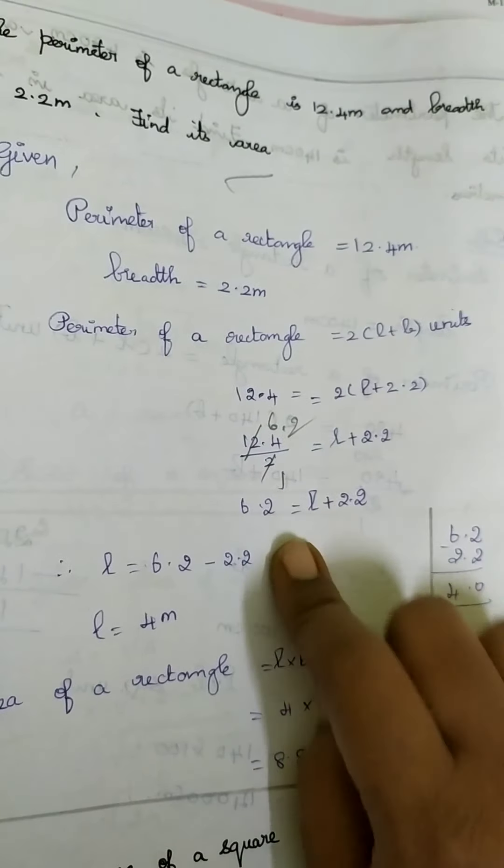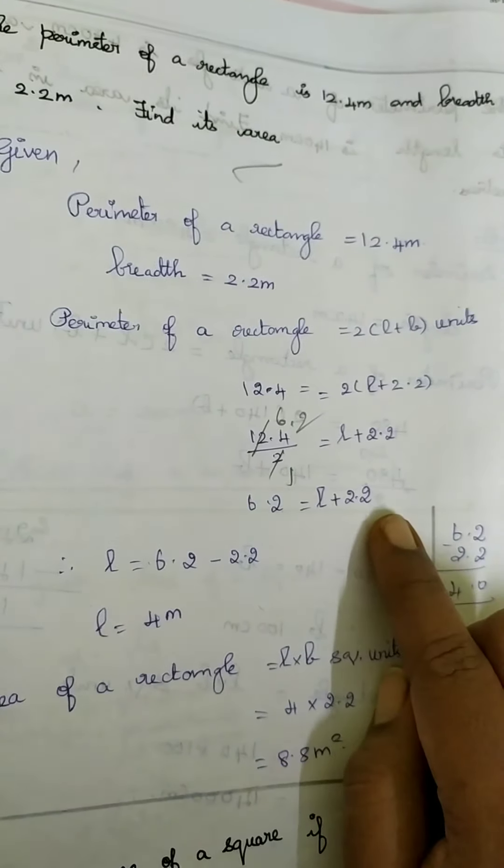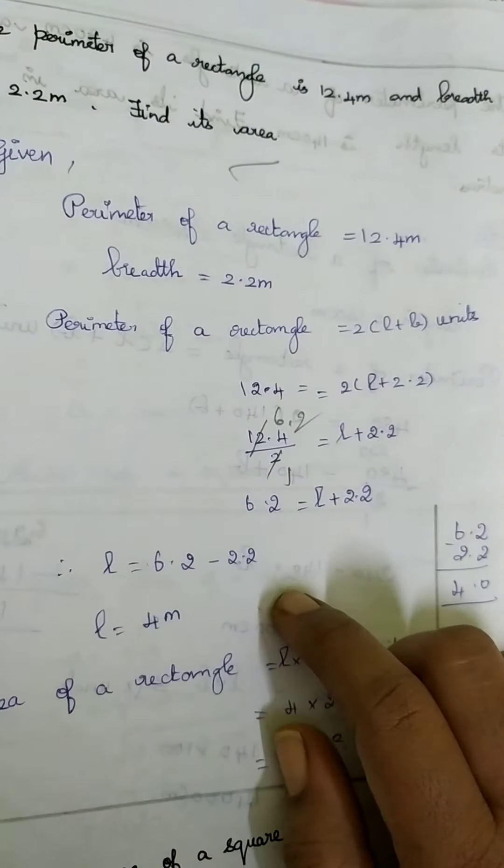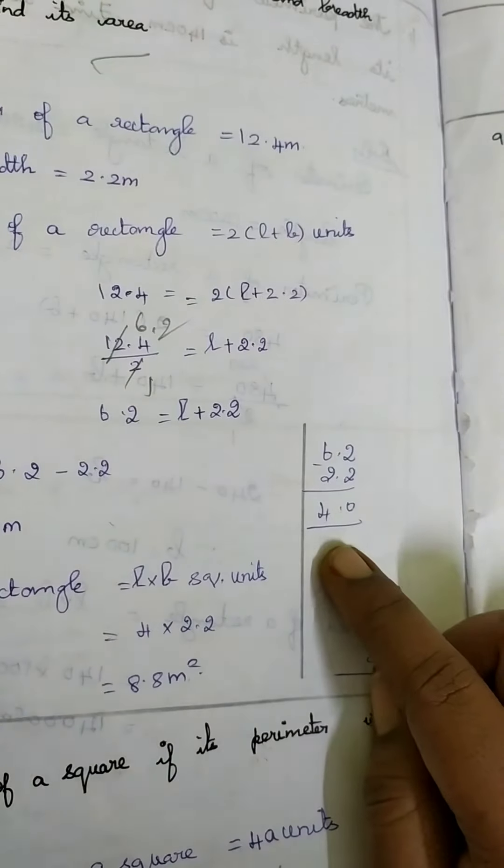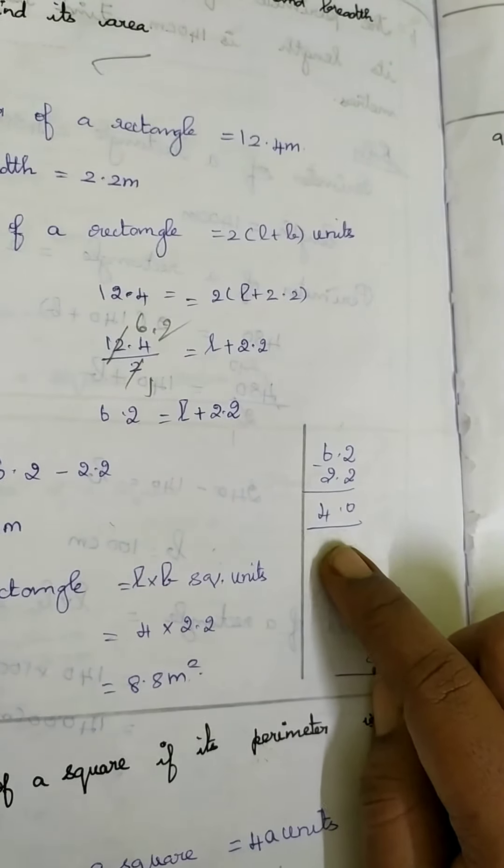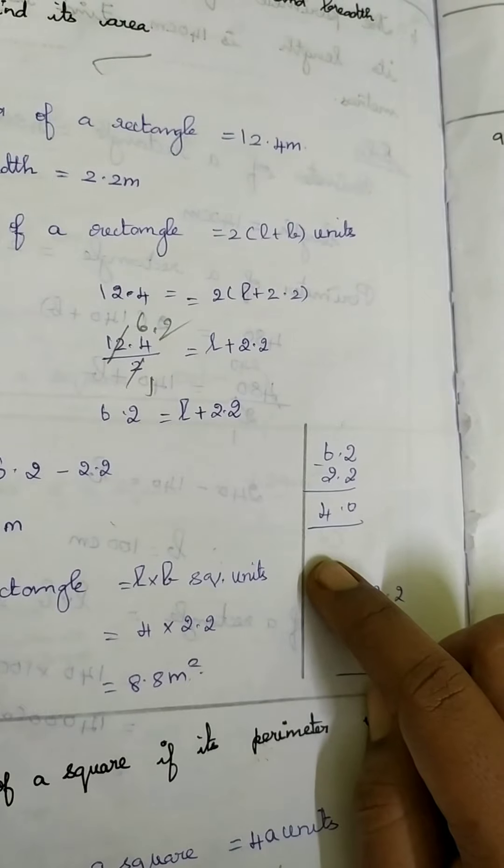So 12.4 divided by 2 is equal to L plus 2.2. When you cancel using 2 tables 6.2 is equal to L plus 2.2. So to find length L is equal to 6.2 minus 2.2. If you subtract you will be getting 4.0. After decimal point if you have 0 no value. So your length is 4 meter.